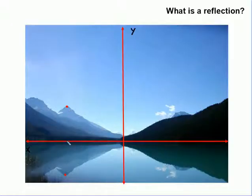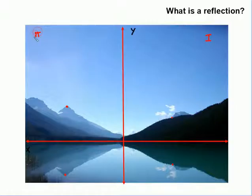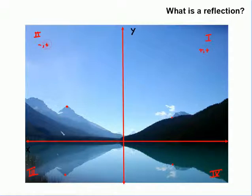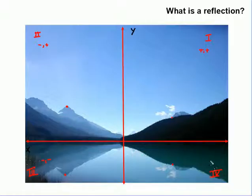They are exactly the same distance from the lake going up as they are from the lake going down. And on this side, if I look at the point where the rock meets the trees, I can see that it is in exactly the same spot in this quadrant. So remember: this is our first quadrant, this is our second quadrant, this is our third quadrant, and this is our fourth quadrant. These are all positive-positive points, these are all negative-positive points, these are all negative-negative points, and these are all positive-negative points.